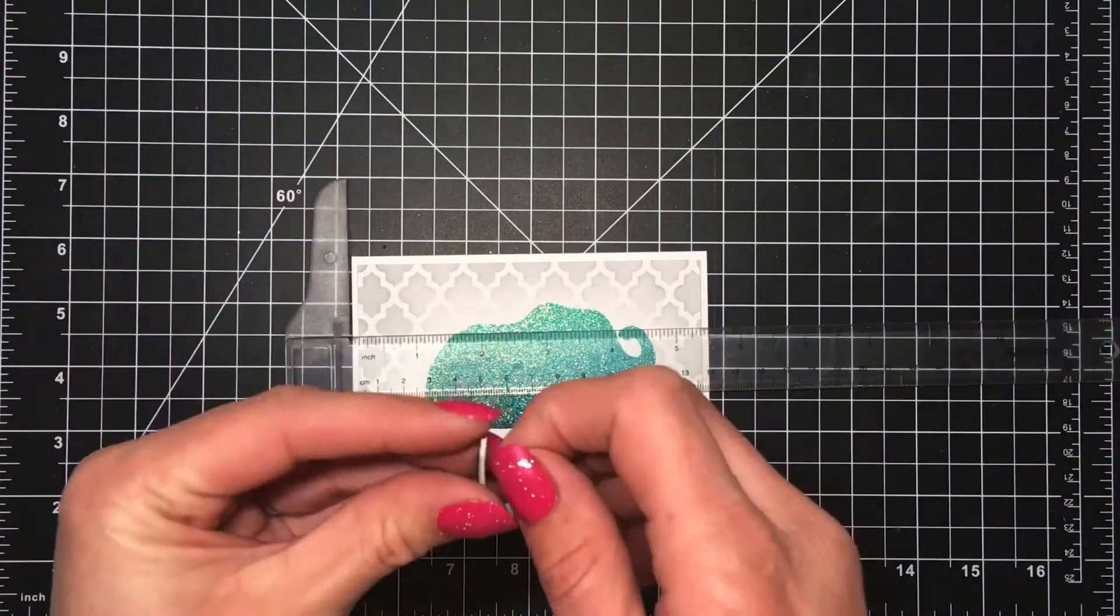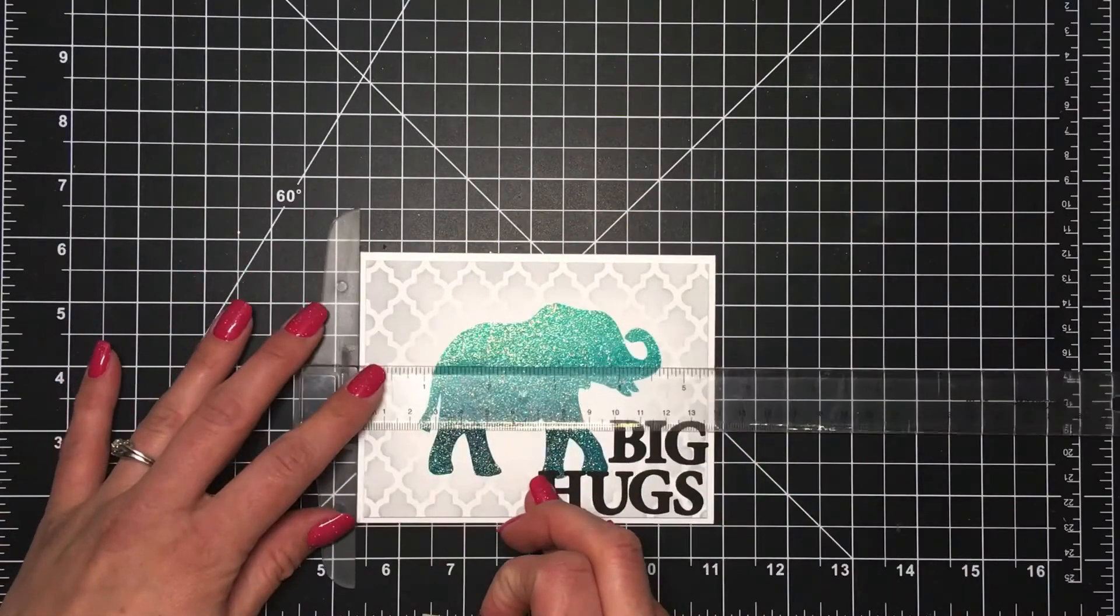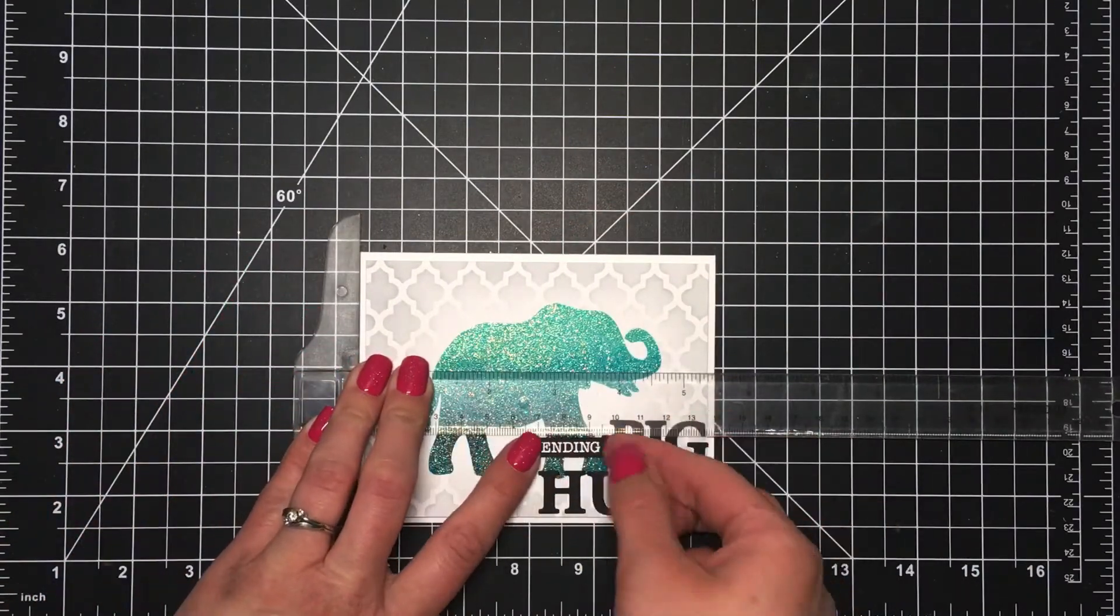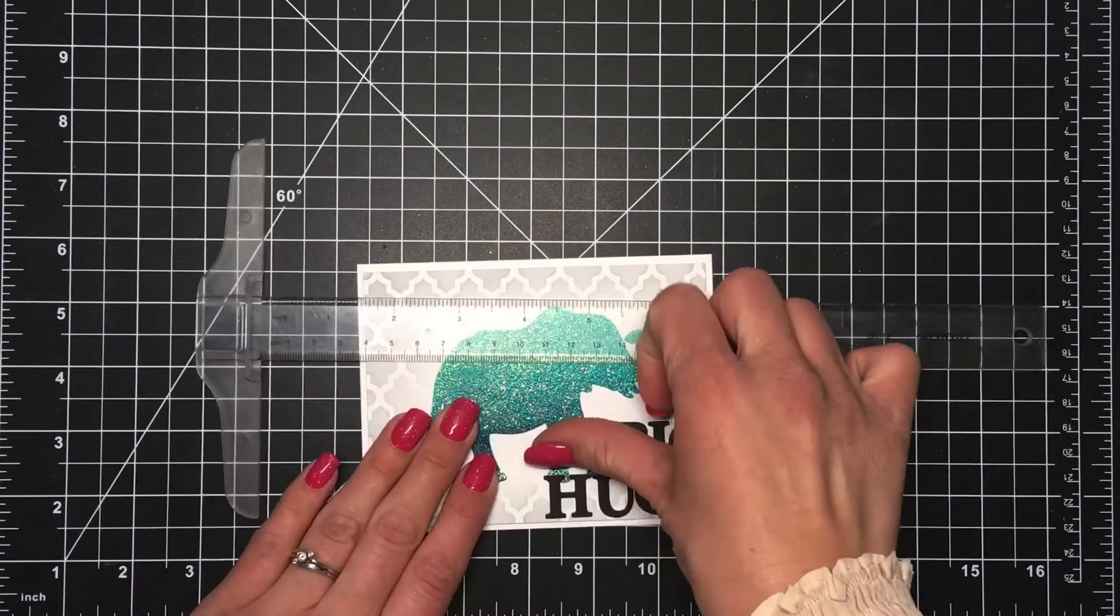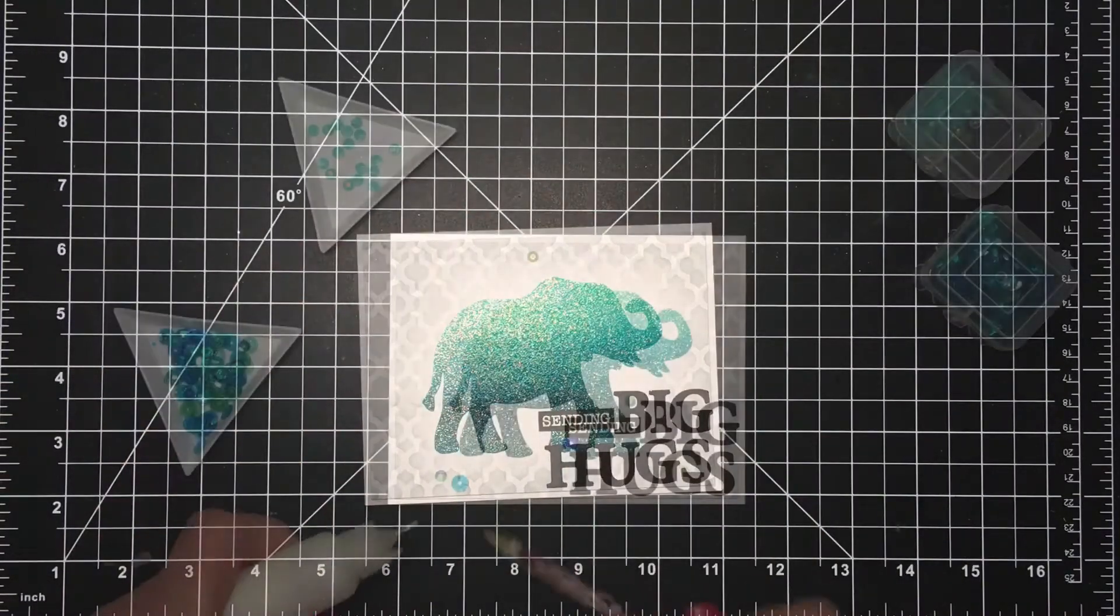And then I've got another piece of that Scotch foam tape on the back of that sentiment. I use my T-score ruler to make sure that that's all lined up straight and I will adhere that down next to the rest of the sentiment.